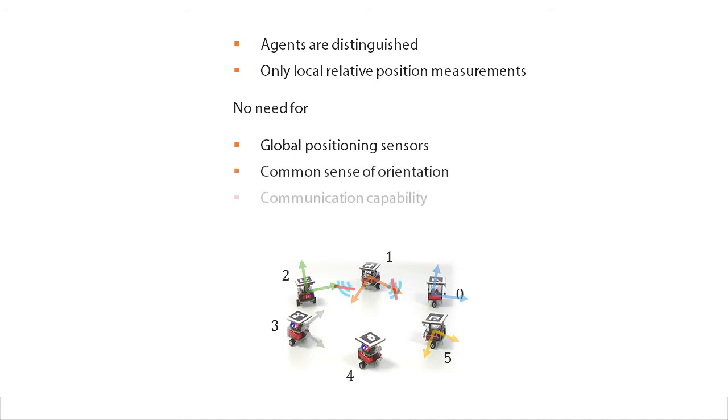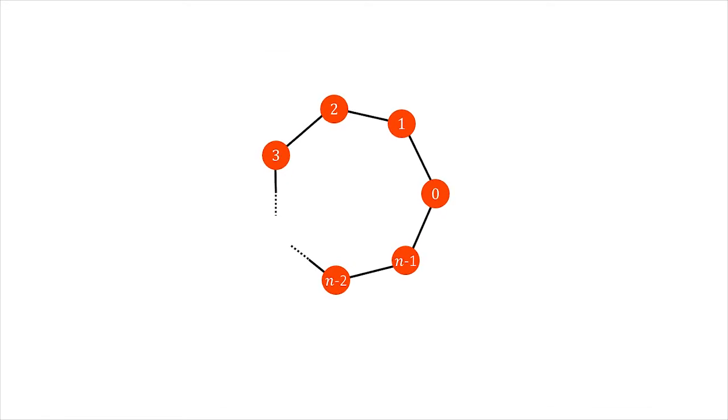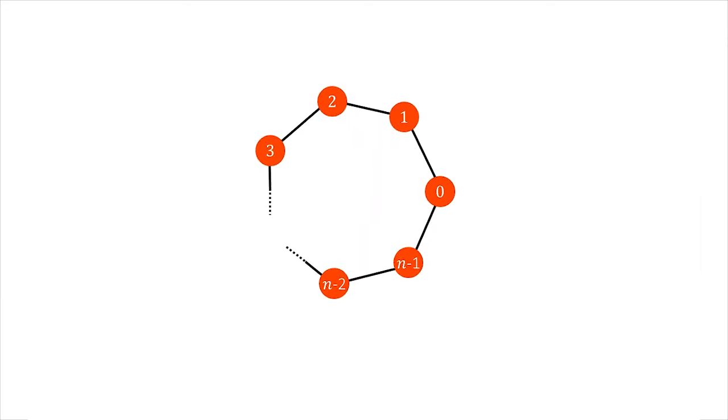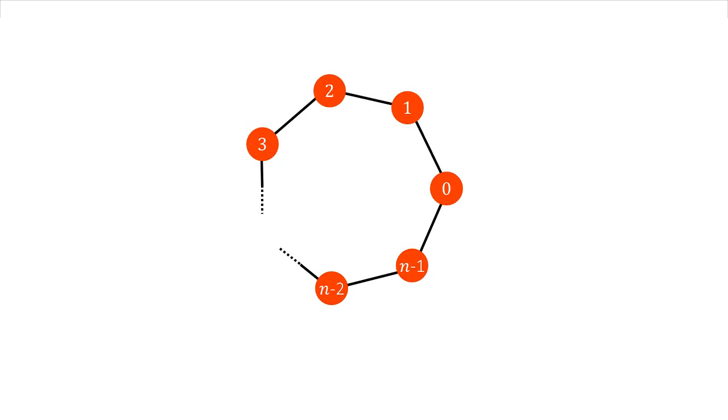We assume that the graph that describes the sensing among agents is cyclic. A cyclic graph is the minimum sensing required to achieve a polygon formation—achieving the formation is no longer feasible if sensing among two agents is interrupted.